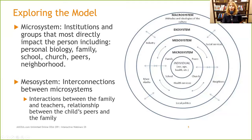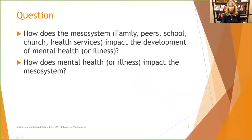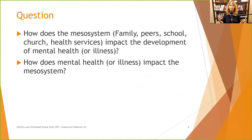Think about how the mesosystem — family, peers, school, church, recreational activities, health services — impacts the development of mental health or illness. If you have positive family-peer interactions, it's probably going to support mental health. It's probably going to support decision-making in the adolescent.